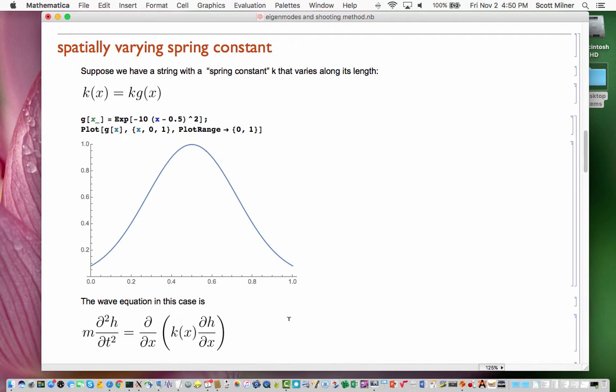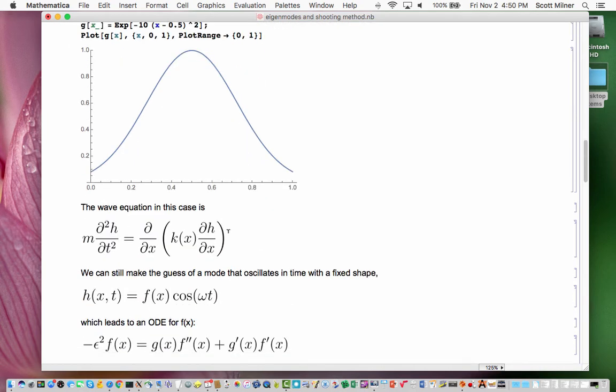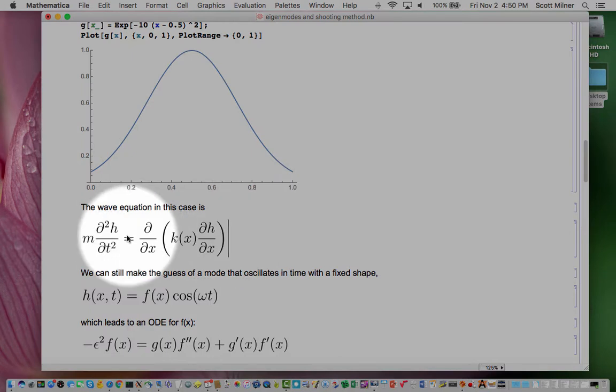The wave equation in this case is slightly different. It takes a form like this. But we can still make the same procedure of trying to guess that there are shapes of the string modes, the fancy word for it is eigenmodes, of the string motion that oscillate in time with some cosine and have a fixed shape. And so we make this very same guess,